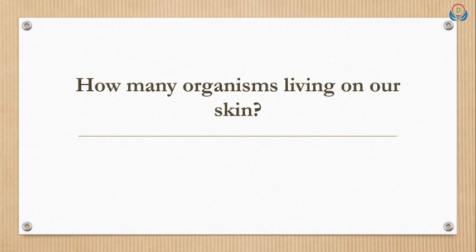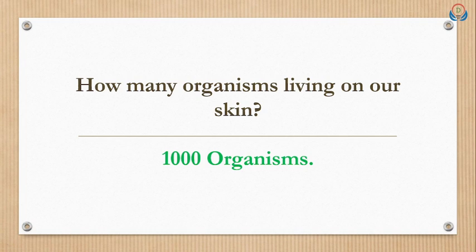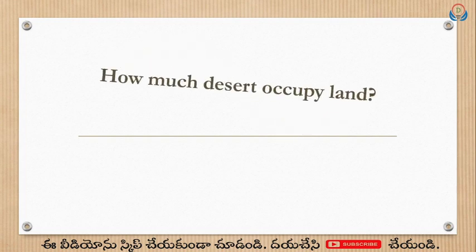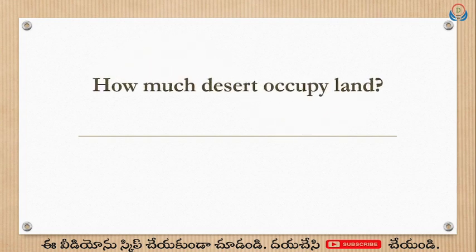How many organisms are living on our skin? The answer is one thousand organisms, as per the textbook. These bits are prepared directly from the textbook. How much of the land do deserts occupy? The answer is seventeen percent. Deserts are occupying seventeen percent of the land.